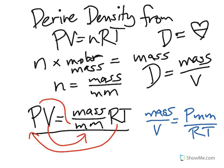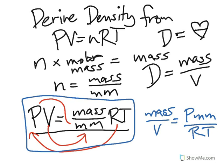And that's it. That's how to derive density from the ideal gas equation. Taking a look at this basic algebra manipulation, we can derive the density, which is mass divided by volume, equals pressure times the molar mass divided by RT.